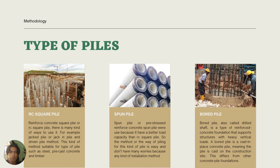The next one is spun pile. Pre-stressed reinforced concrete spun pile is used because it has better load capacity than RC square pile. The method of piling for this kind is straightforward, and any kind of installation will not cause the pile to buckle in the process. The next one is bored pile, also called drilled shaft. It is a type of reinforced concrete foundation that supports structures with heavy vertical loads. A bored pile is a cast-in-place concrete pile, meaning the pile is cast on the construction site, which differs from other precast concrete pile foundations.